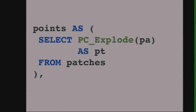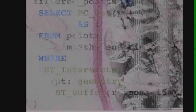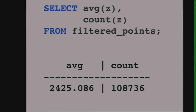Given the patches, I'm going to explode them into a set of points — a big tuple set of points. Then I want to filter them: the points are coming in, and I'm going to filter them to find just the points that fully intersect that buffer. That filters down the patches that were partly in the buffer and leaves behind only the points fully within it. The last step is to take those points and calculate the average elevation of all of them. The average elevation of the rim of the Mount St. Helens caldera is 2,425 meters.